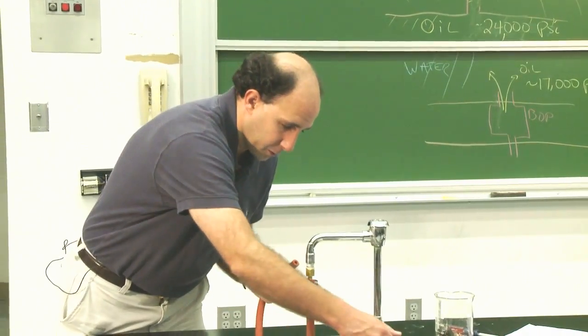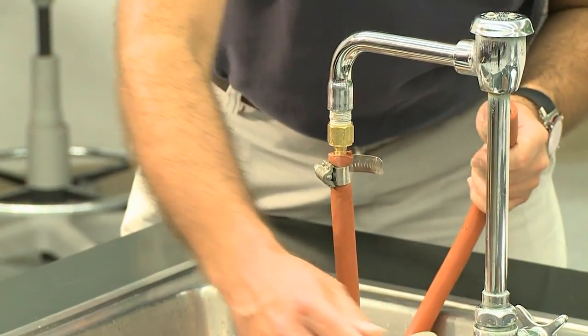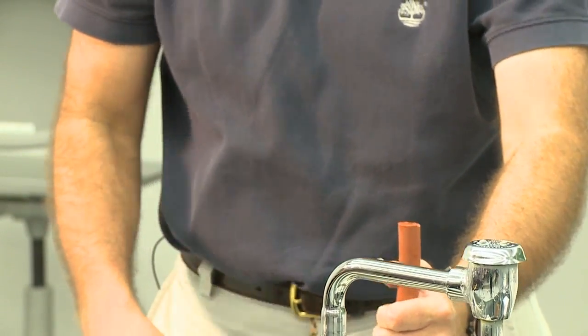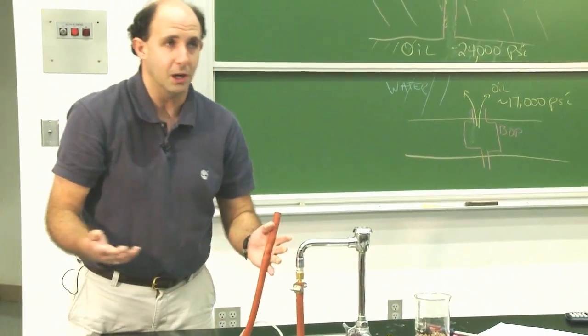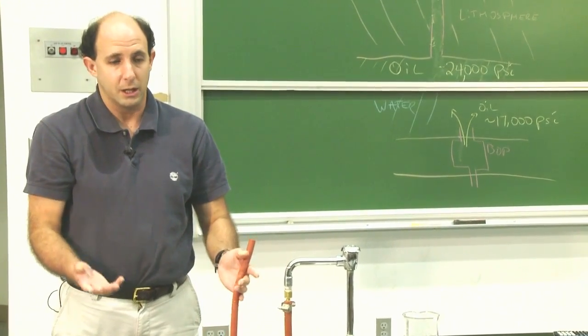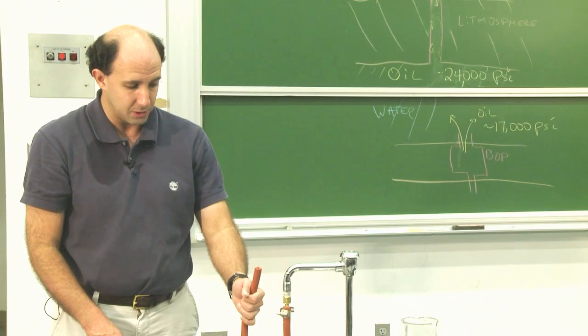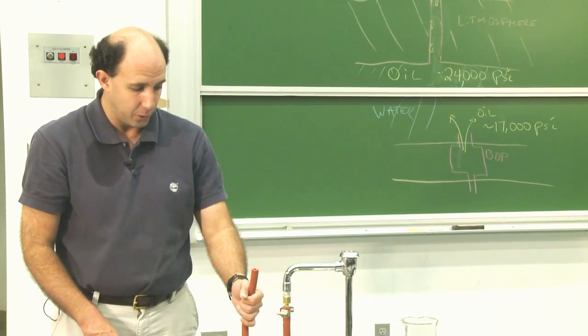So in the first, one of the first solutions was to take, well first of all, they tried to put something like a house, a four-story house above the blowout preventer. But as we know, that failed because there were crystals that were formed under high pressure and lower temperature conditions that blocked the flow of oil.